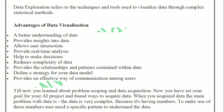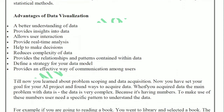Till now you have learned about problem scoping and data acquisition — you have set your goal for your AI project, verified the 4Ws canvas, prepared the problem statement, and understood where to get your data. When you acquire data, the main problem is that data is very complex. When you gather and collect data, you see it is complex and not easily understood because it contains numbers or text. To make use of these numbers, users need a specific pattern to understand the data.